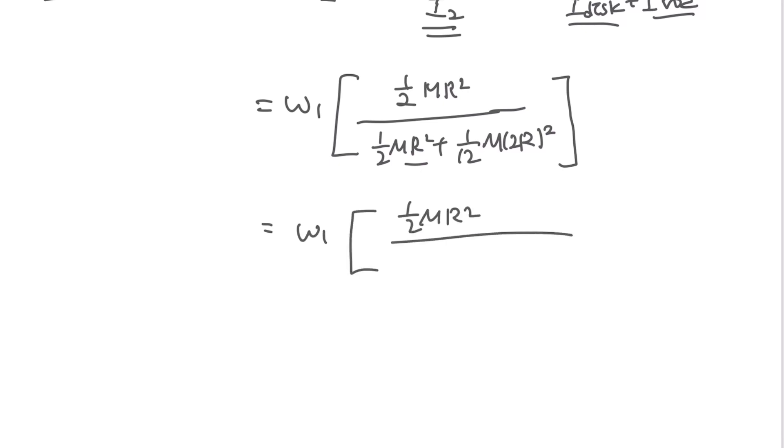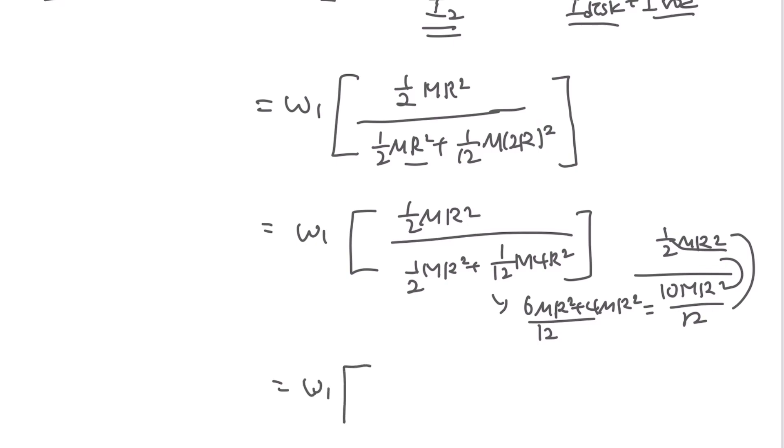And let's simplify this value, so it would be something like 1/2 MR^2 plus 1/12 M times 4R^2, which is equal to 6/12 MR^2 plus 4/12 MR^2, so it would be 10/12 MR^2.